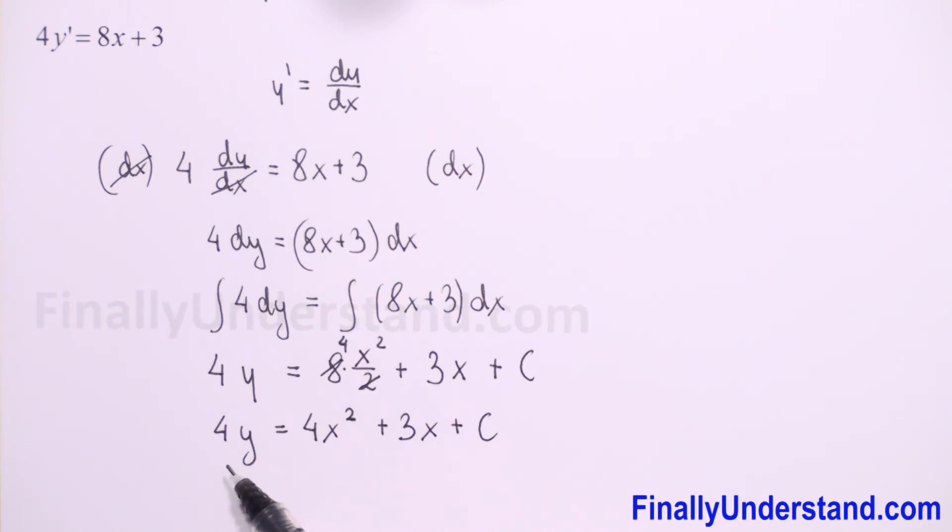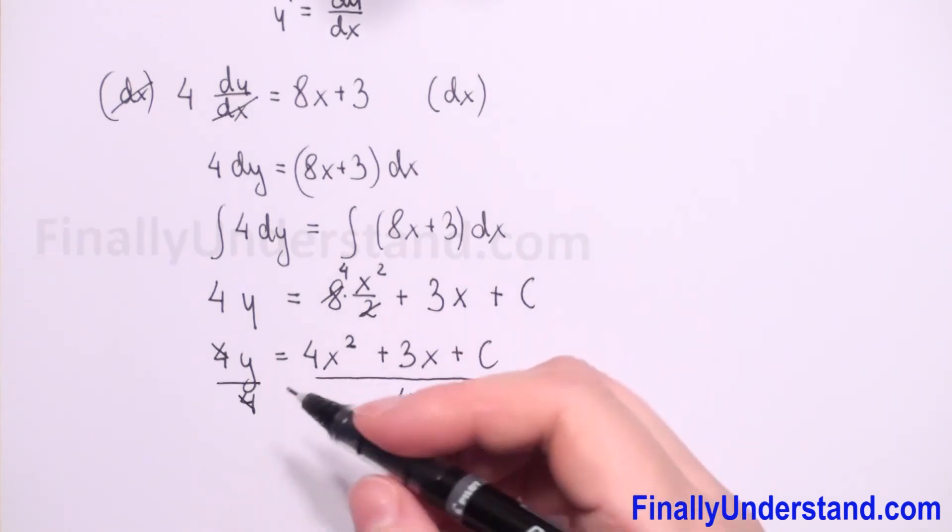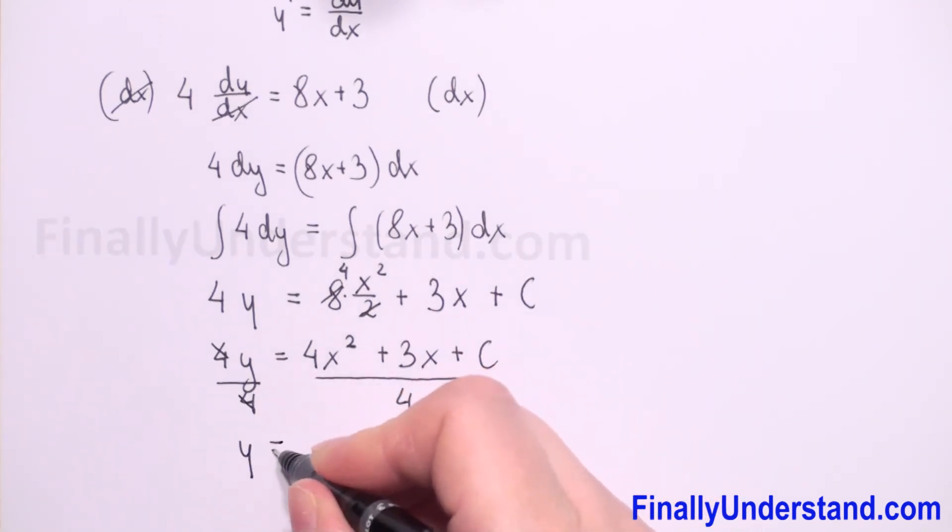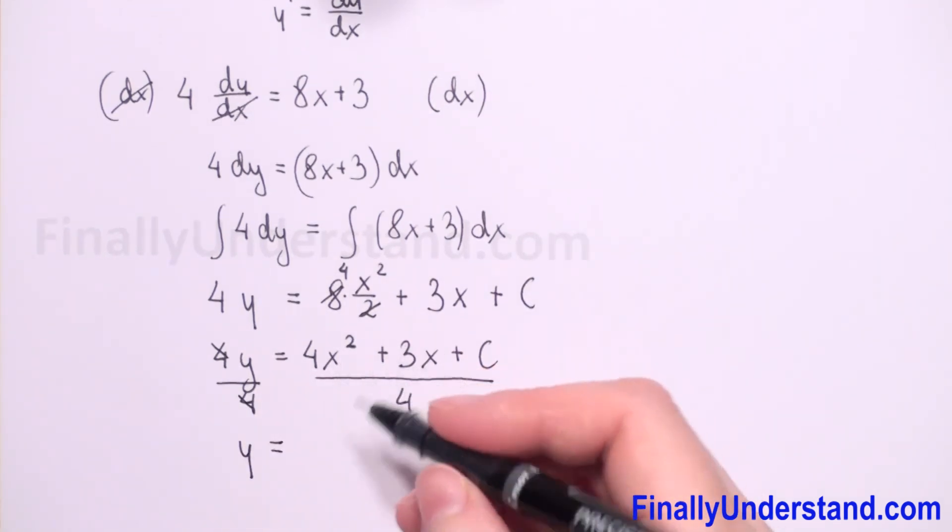Because we need to get y, I will divide both sides by 4. So 4 and 4 we can reduce, and we have y is equal to 4x squared divided by 4, which is x squared.